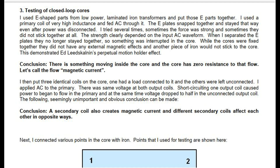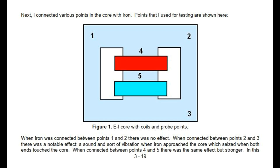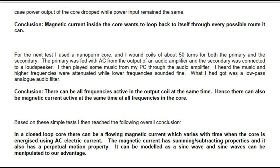Various points in the core were connected with iron, with probe points shown in Figure 1 — EI core with coils and probe points. When iron was connected between points 1 and 2 there was no effect. Between points 2 and 3 there was a notable effect: a sound and sort of vibration when iron approached the core, which ceased when both ends touched the core. Between points 4 and 5 the same effect was observed but stronger, and power output of the core dropped while power input remained the same. Conclusion: magnetic current inside the core wants to loop back to itself through every possible route it can.